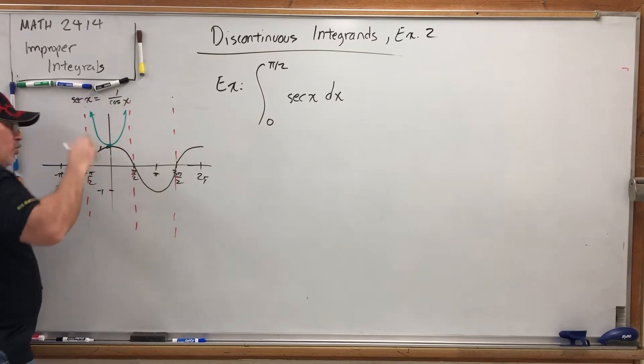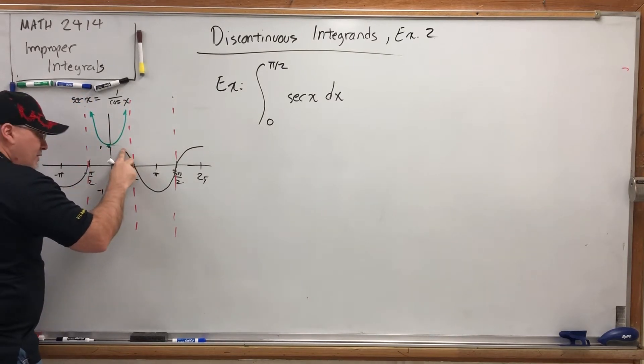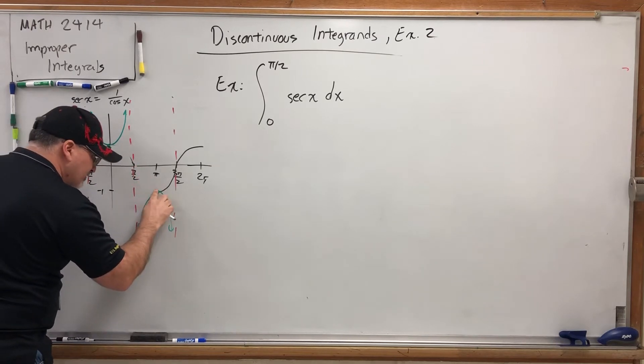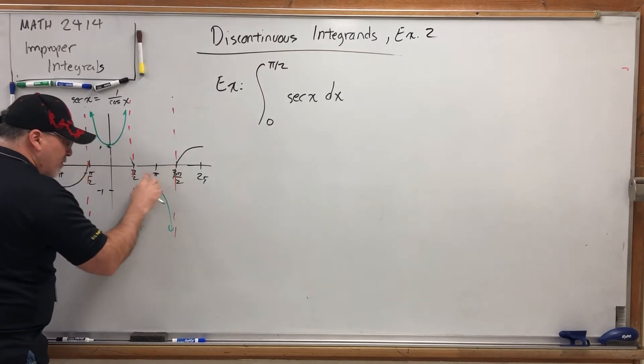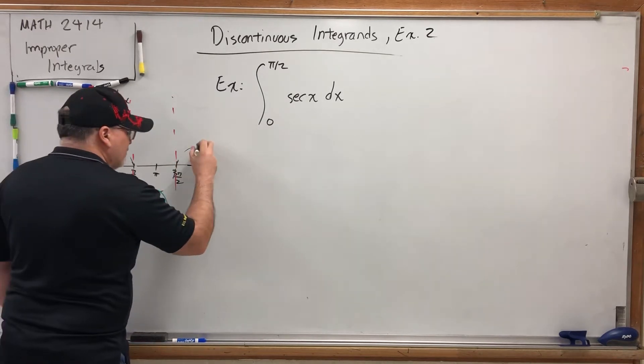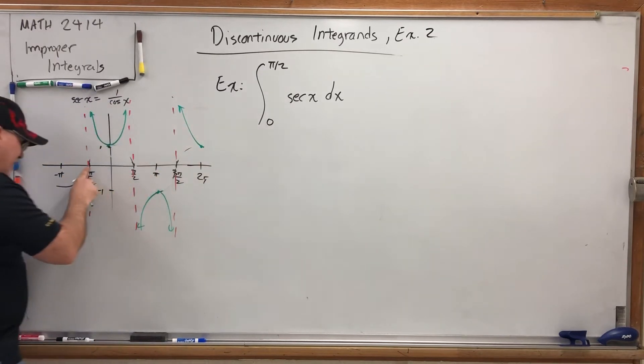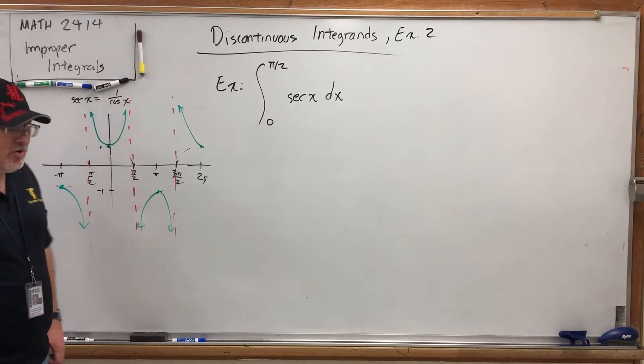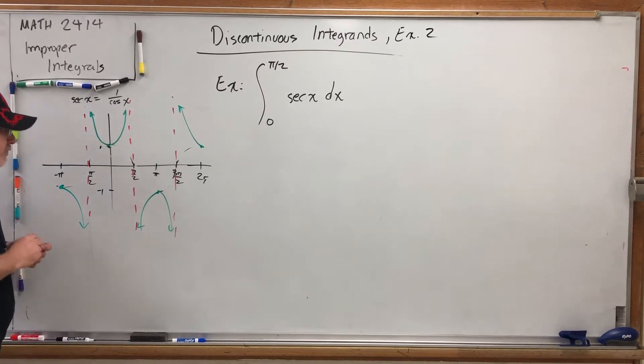So this, quote-unquote, reciprocates into that. This piece, quote-unquote, reciprocates into this branch, and it looks like a parabola, except it's not, because parabolas aren't bound by asymptotes. And if we reciprocate this guy, it looks like that. Same thing right here. And again, we flip them at 1 and negative 1, because the reciprocal of 1 is 1, reciprocal of negative 1 is negative 1.